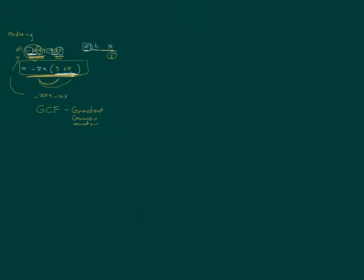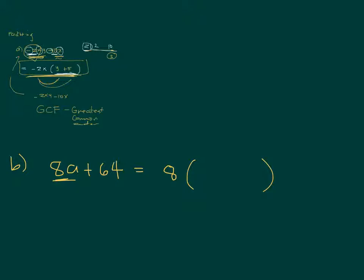The next example is 8a plus 64. What will be a common factor for 8 and 64? 8 — it can divide 8 and it can divide 64. For the letters, do you see an 'a' in both the first and second terms? No, so you cannot factor out a. The only greatest common factor is 8. Factoring out 8 leaves a plus 8. If you check, 8 times a gives 8a and 8 times 8 gives 64 — correct.